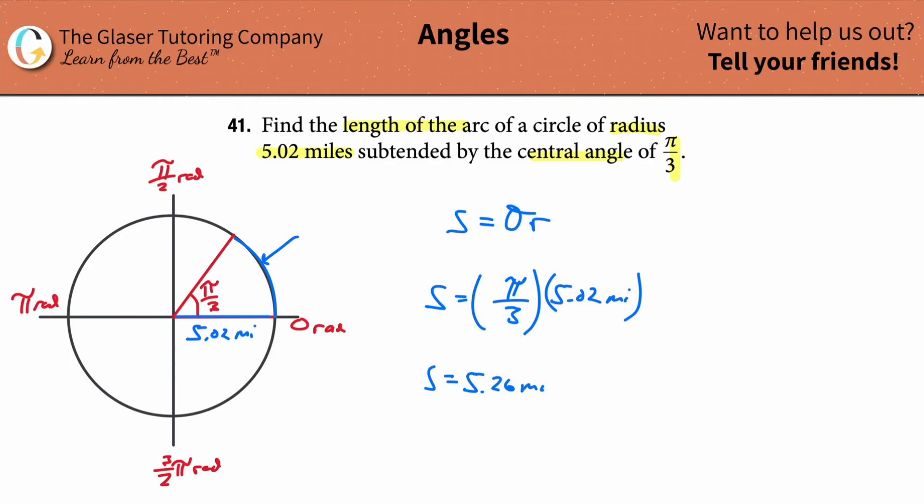In other words, if you were to take now this arc length here, this curved value, this curve here, and you were to straighten the line out, and you took a measurement, you took a measuring tape, be a very long measuring tape, and you measured it out, it would be 5.25 miles, roughly.